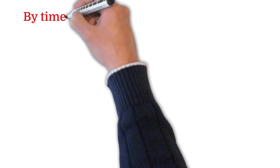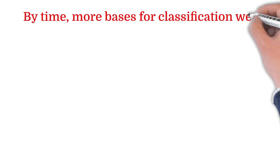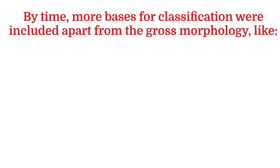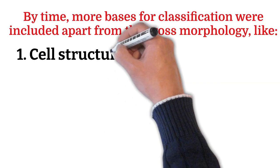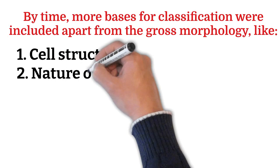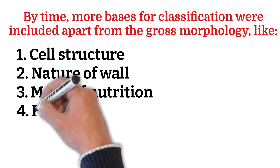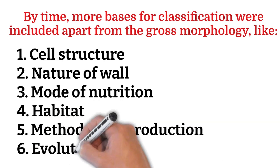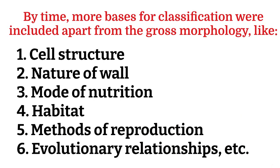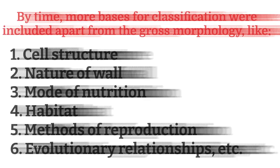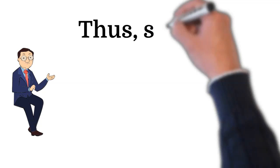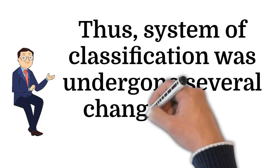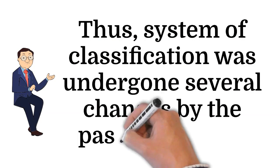By time, more bases for classification were included apart from the gross morphology, like the cell structure, nature of the wall, mode of nutrition, habitat, methods of reproduction, evolutionary relationships, etc. Thus, the system of classification underwent several changes with the passing of time.